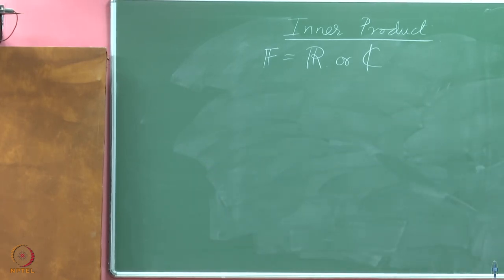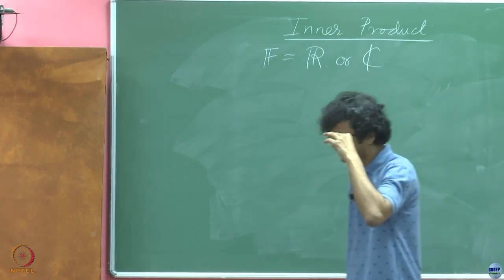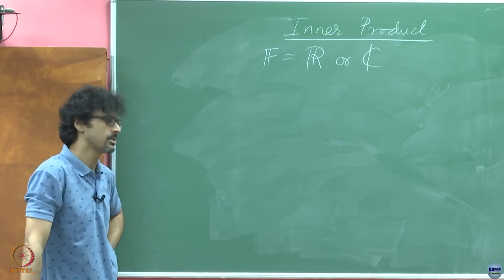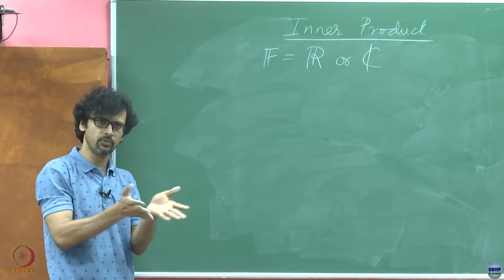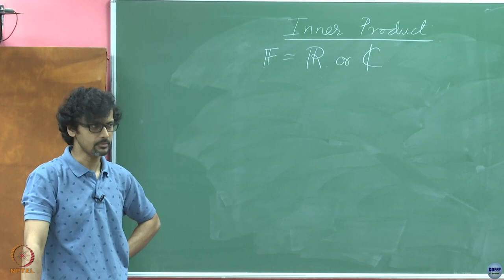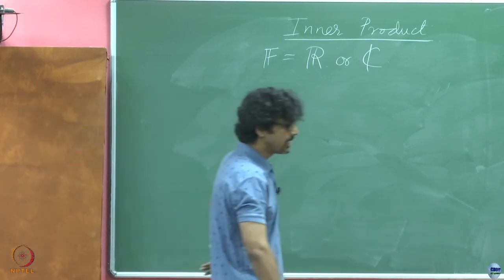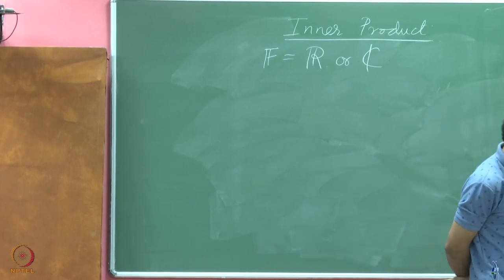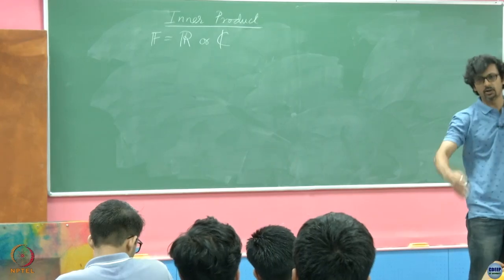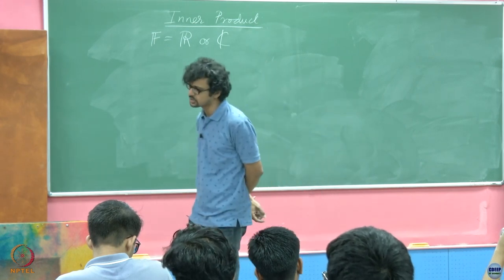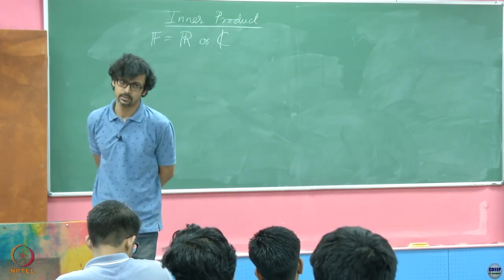Most of you have a feel for what an Inner Product is because of your first brush with Euclidean spaces. You might think of Inner Products as something that signifies angles between vectors. If you take the inner product — the dot product — of a vector with itself, and the vector happens to be non-zero, what do you expect to get?